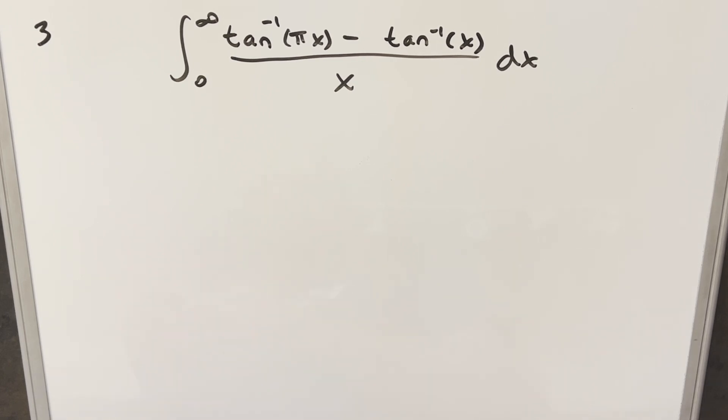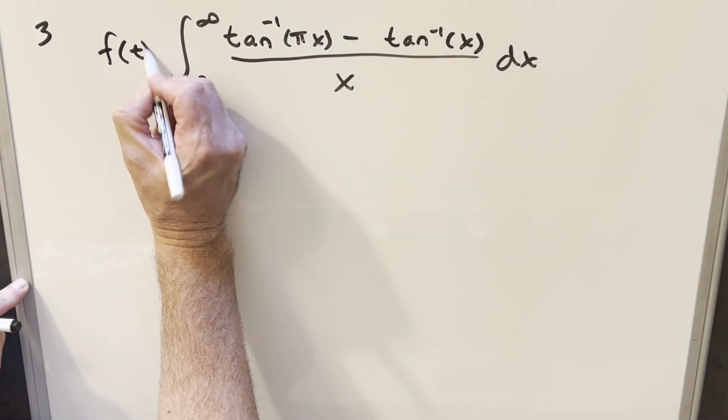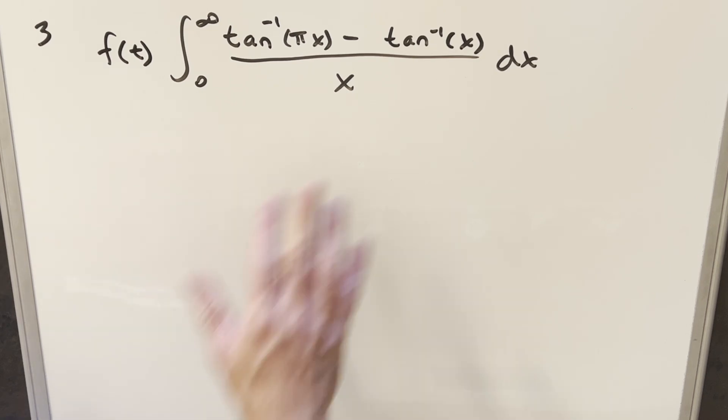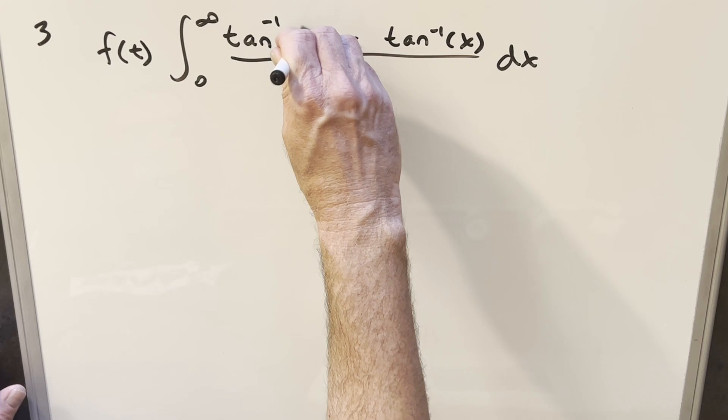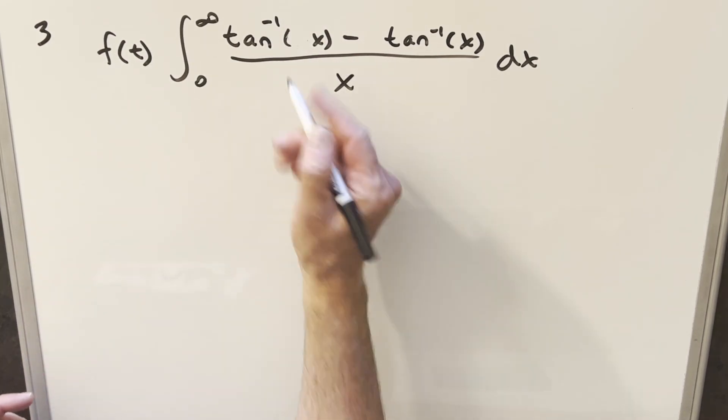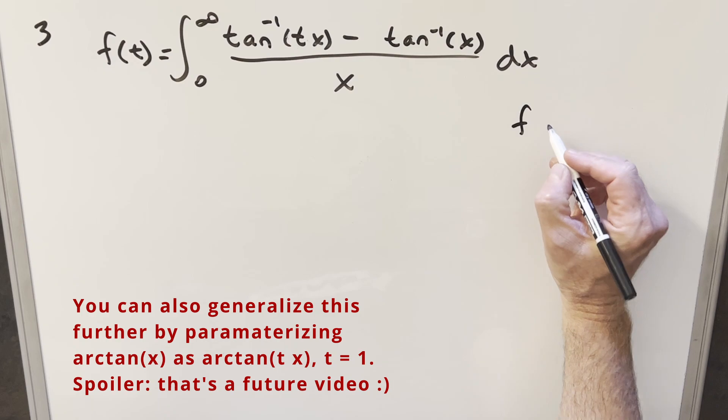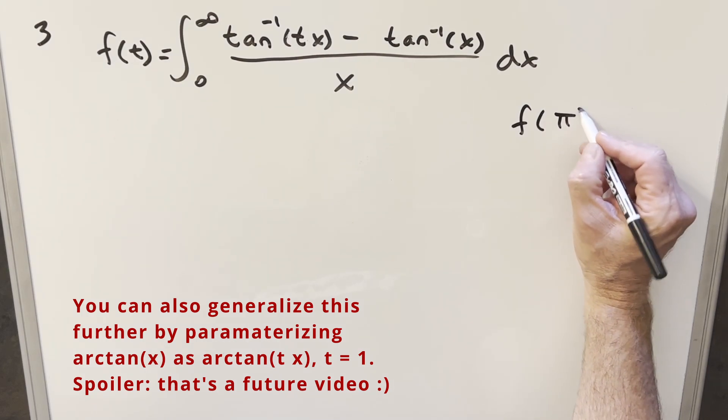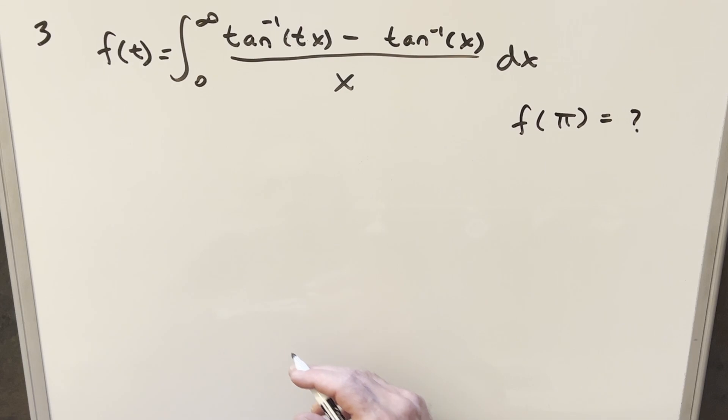So what I found was a pretty good way on this was actually to use Feynman's trick. And what I can do is take our original problem and parameterize it, leaving it all together. But what I can do is where there's this π, let's just turn that into a variable. Let's just turn this into t right here. So doing this, what we're saying is in the end, we're just going to want to find a value for f of π.